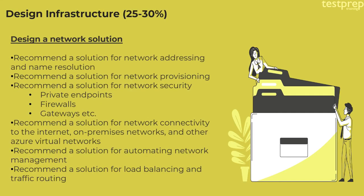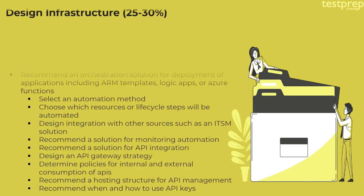Number three: Design a Network Solution, divided into six parts — recommend a solution for network addressing and name resolution; recommend a solution for network provisioning; recommend a solution for network security (including private endpoints, firewalls, gateways, etc.); recommend a solution for network connectivity to the internet, on-premises networks, and other Azure virtual networks; recommend a solution for automating network management; recommend a solution for load balancing and traffic routing.